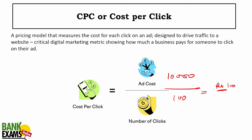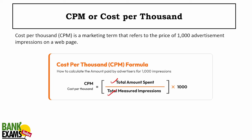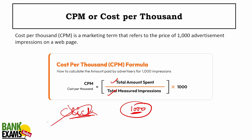CPM is the total amount spent divided by total measured impressions. With CPM, you pay per thousand impressions — you are not concerned with clicks. You are showing your ads on Google or another platform, and for every 1,000 times your ad is shown, you pay a set rate. For example, if total spend is 10,000 rupees and total impressions are 10,000, then CPM equals 1.